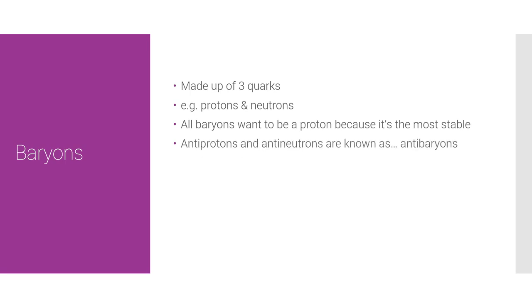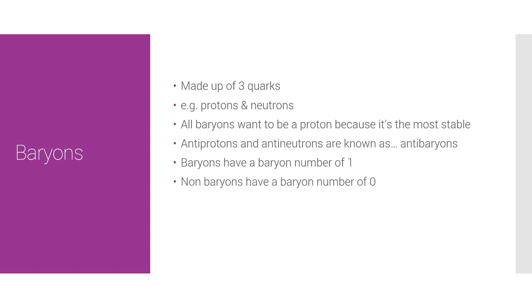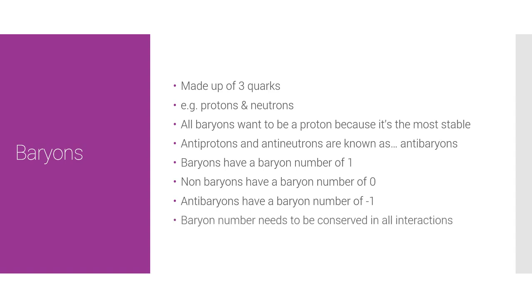What about anti-protons and anti-neutrons? Yes, they exist, and they are known as anti-baryons. All baryons have a baryon number of one. Baryon number is a quantum number that must be conserved in all interactions. Baryons have a baryon number of one, non-baryons have a baryon number of zero, and anti-baryons have a baryon number of minus one. Baryon number needs to be conserved in all interactions.